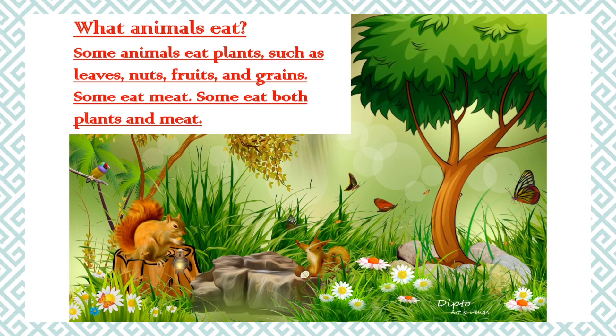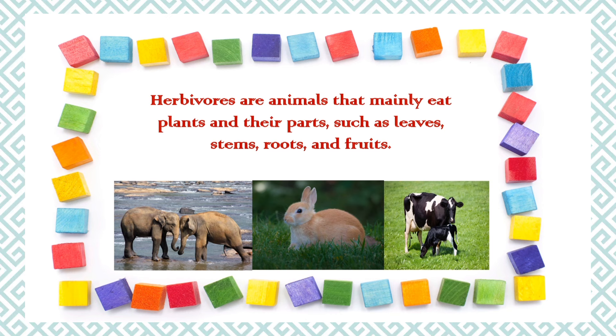What animals eat? Some animals eat plants such as leaves, nuts, fruits and grains. Some eat meat. Some eat both plants and meat. Herbivores are animals that mainly eat plants and their parts such as leaves, stems, roots and fruits. Some of the herbivores are elephants, rabbits and cows.